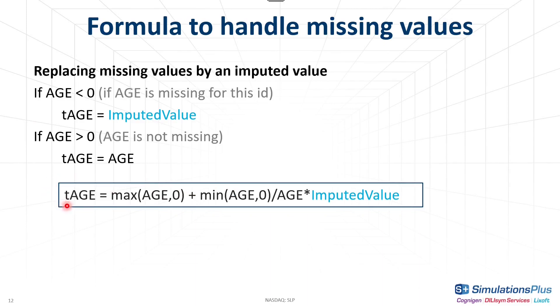This way we define a transformed age, which will be our new continuous covariate. Let's see how the formula works for a given imputed value.